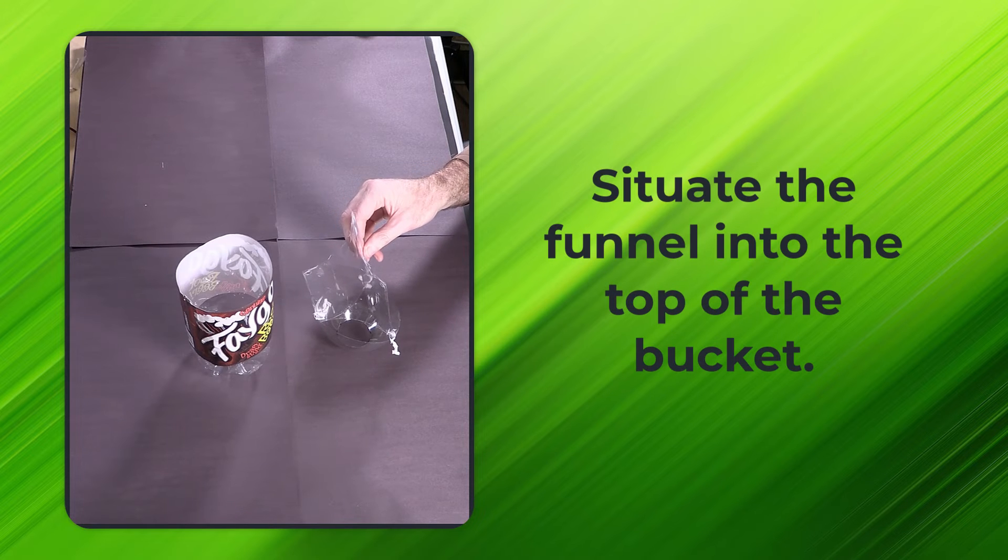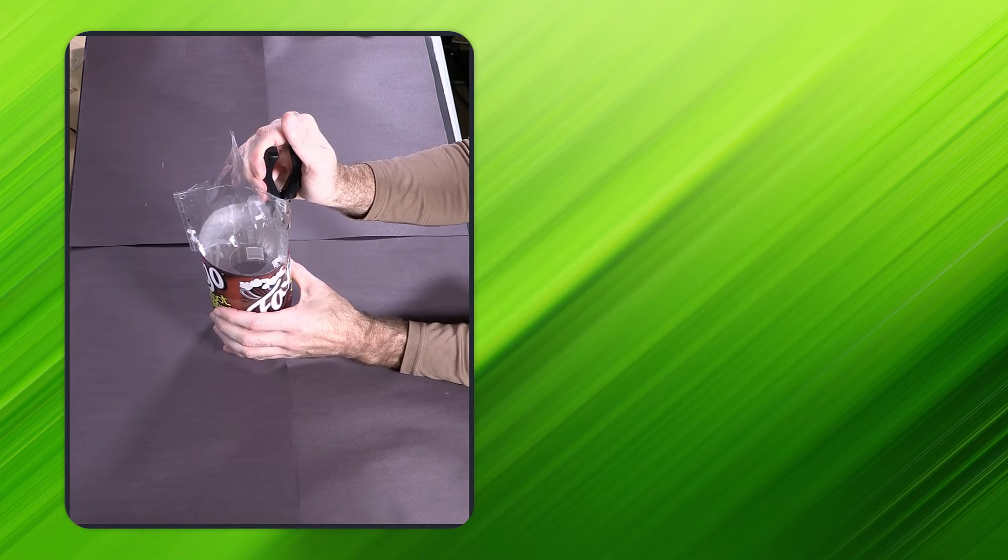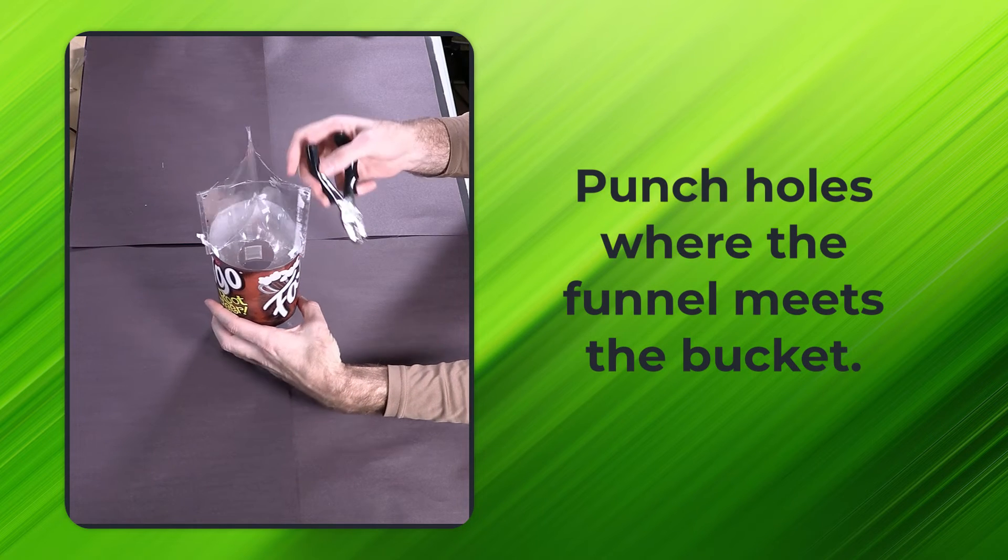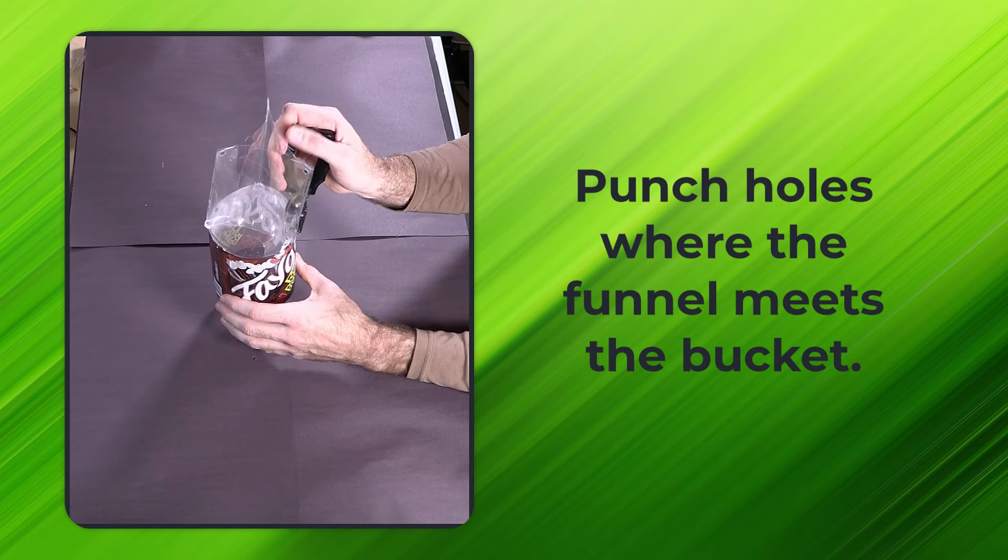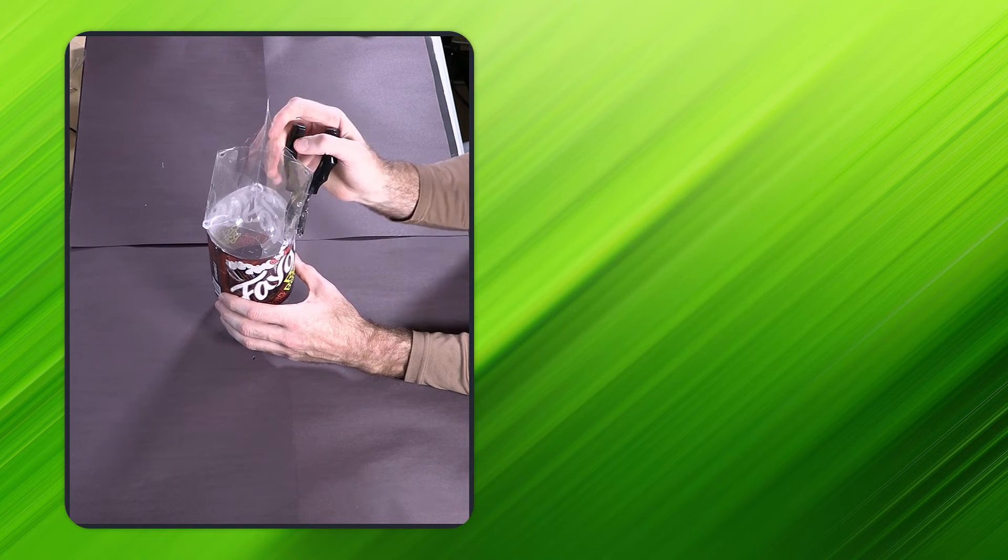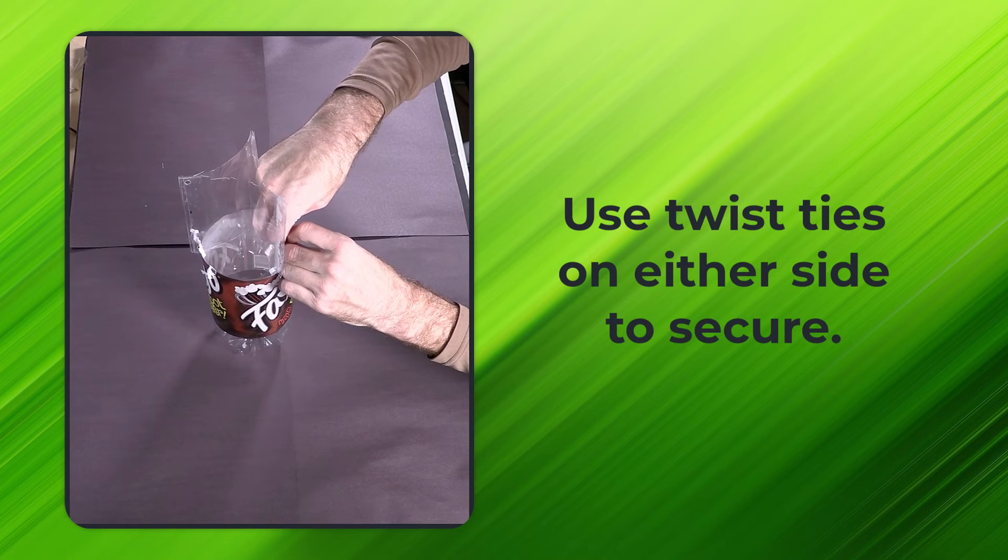Next, situate your funnel inside the collection bucket and use a hole puncher to punch two holes on opposite sides where the funnel meets the collection bucket. These holes would go through the funnel and the side of that collection bucket. Next, use a twist tie on each side to secure the funnel to the bucket.